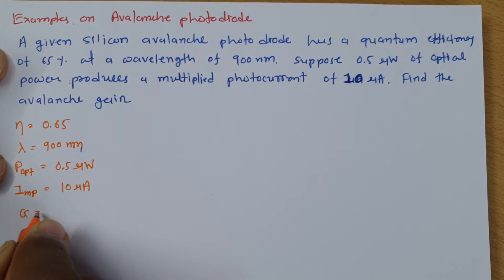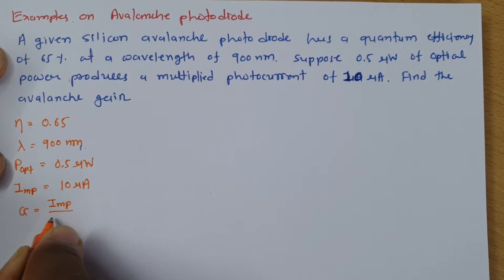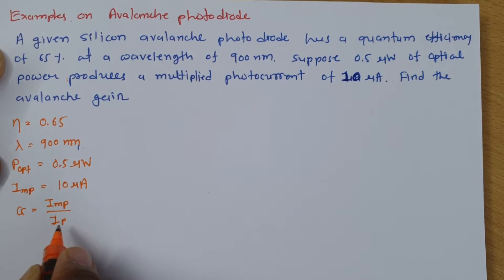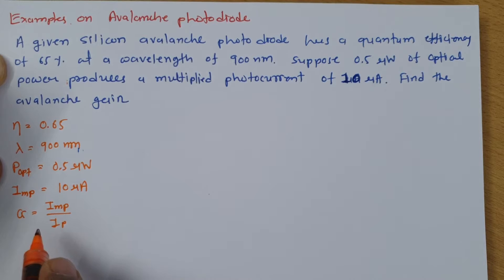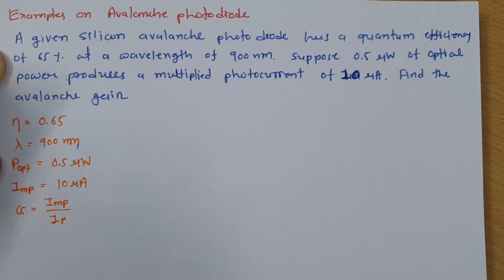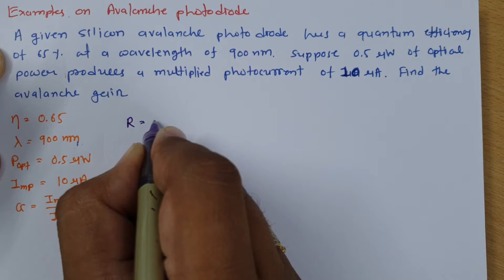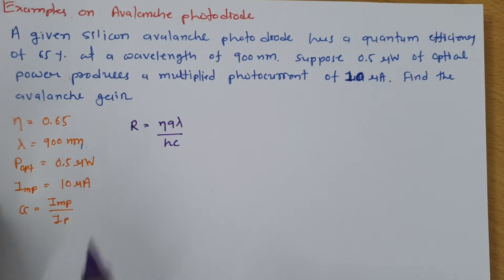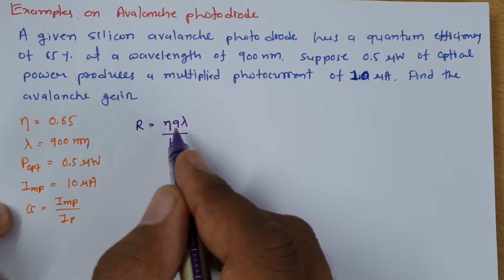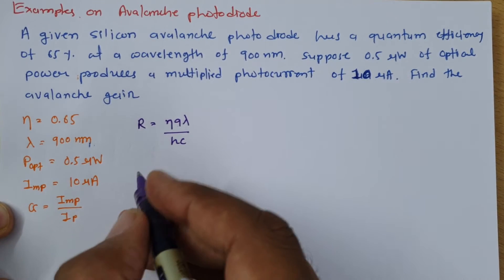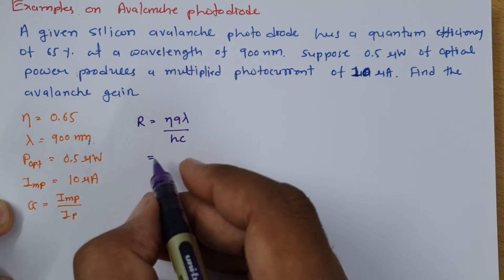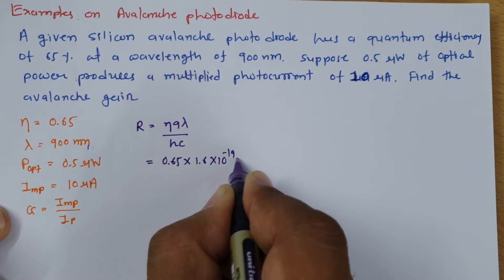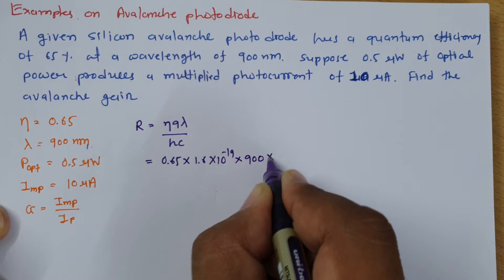The avalanche gain is multiplied photocurrent divided by photocurrent. So first, our agenda is to calculate the photocurrent, which we can find using the responsivity R. The responsivity formula is R = ηqλ / hc. Here, η = 0.65, q = 1.6×10⁻¹⁹, and λ = 900 nanometers = 10⁻⁹.